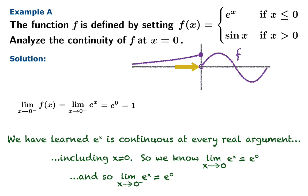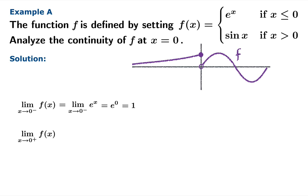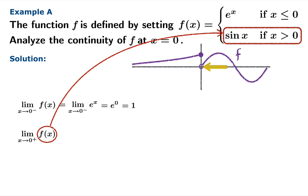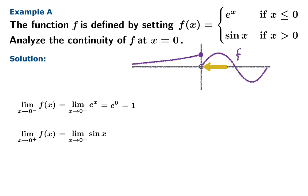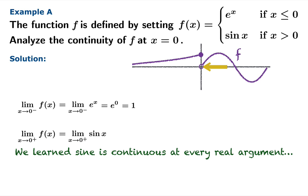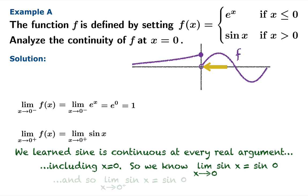You may not have to write all this out, but you should be able to see the justification for each claim. Now let's look at the limit as x approaches zero from the right. Here we use arguments to the right of the origin, so we substitute sine x for f of x. We know sine is continuous at every real argument, so the limiting value as x approaches zero from the right of sine x is sine zero, which is zero.